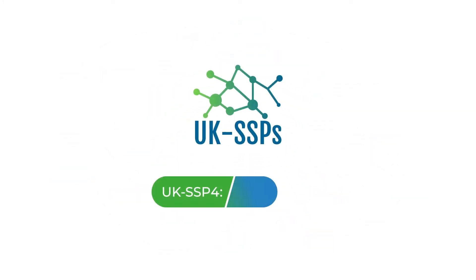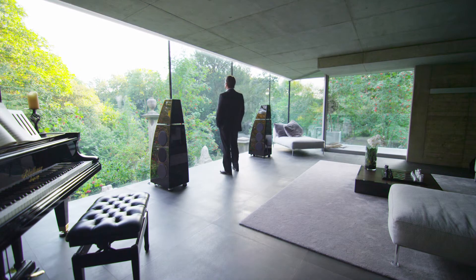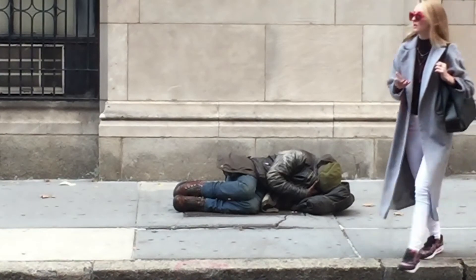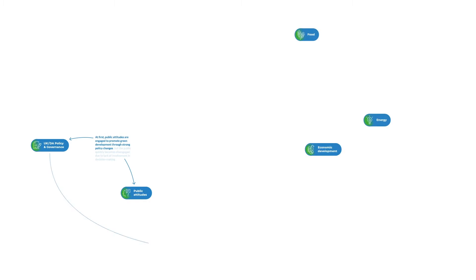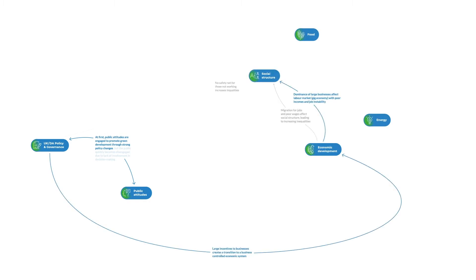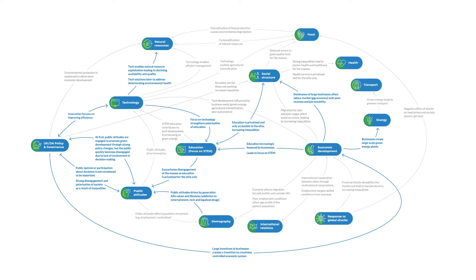UK SSP4, the inequality scenario, is a society dominated by business and political elites who curtail welfare policies and exclude the majority of the UK population from decision making. The elite facilitate low carbon economies resulting in low challenges to climate mitigation, but large differences in income across segments of UK society limit the ability of the masses to adapt to climate change.